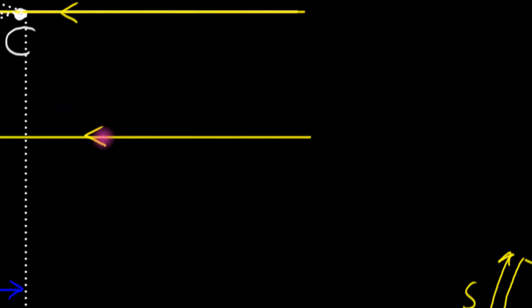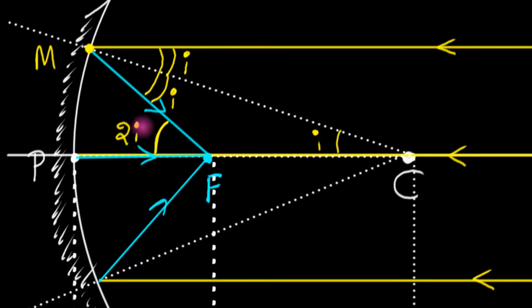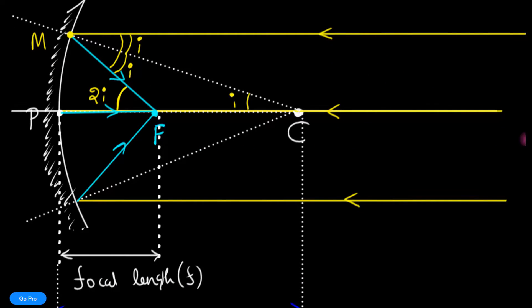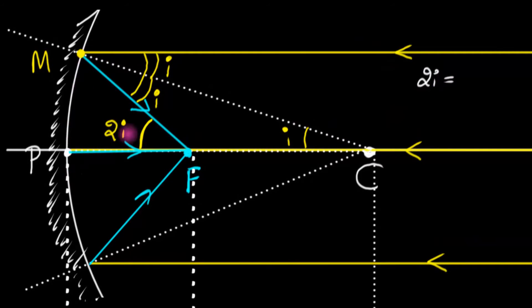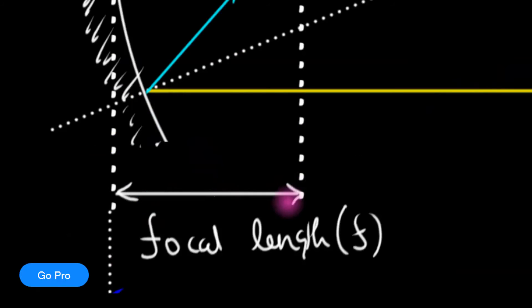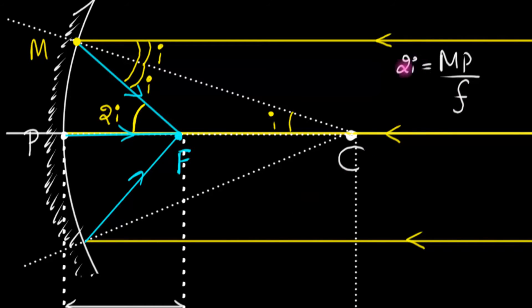θ is defined as the ratio of the arc length divided by the radius. What we can do now is invoke that over here. So we can say 2i—the angle 2i—must be equal to arc length mp divided by this distance, which is just the focal length f. But i can be written as two times arc length mp divided by PC, which is just the radius of curvature r.